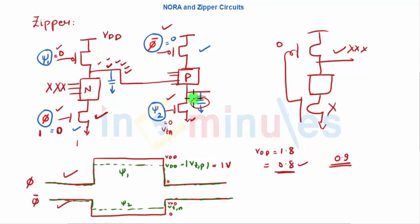In summary: NORA circuits avoid the race condition in dynamic circuits by alternating NMOS and PMOS logic stages. However, NORA still suffers from charge leakage, so Zipper circuits are used — the circuit is identical to NORA, but the clocks are adjusted so that precharge or pre-discharge transistors remain partially on during evaluation, ensuring output values are not lost. Hope you have followed NORA and Zipper circuits — stay tuned for further clips, thank you.